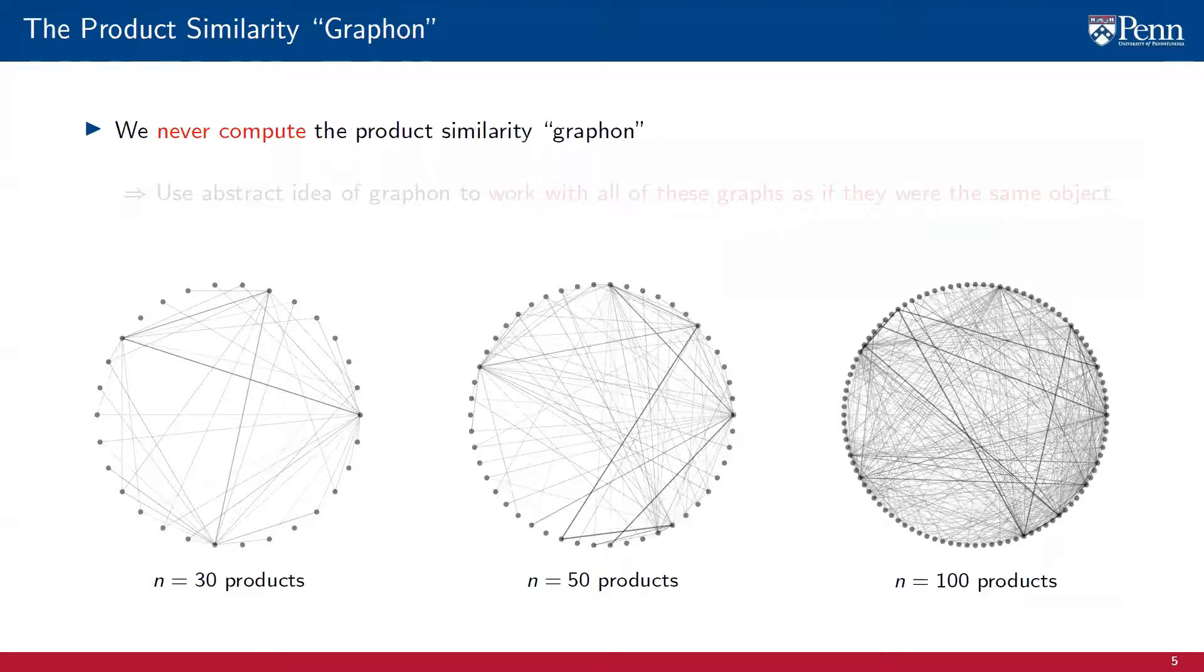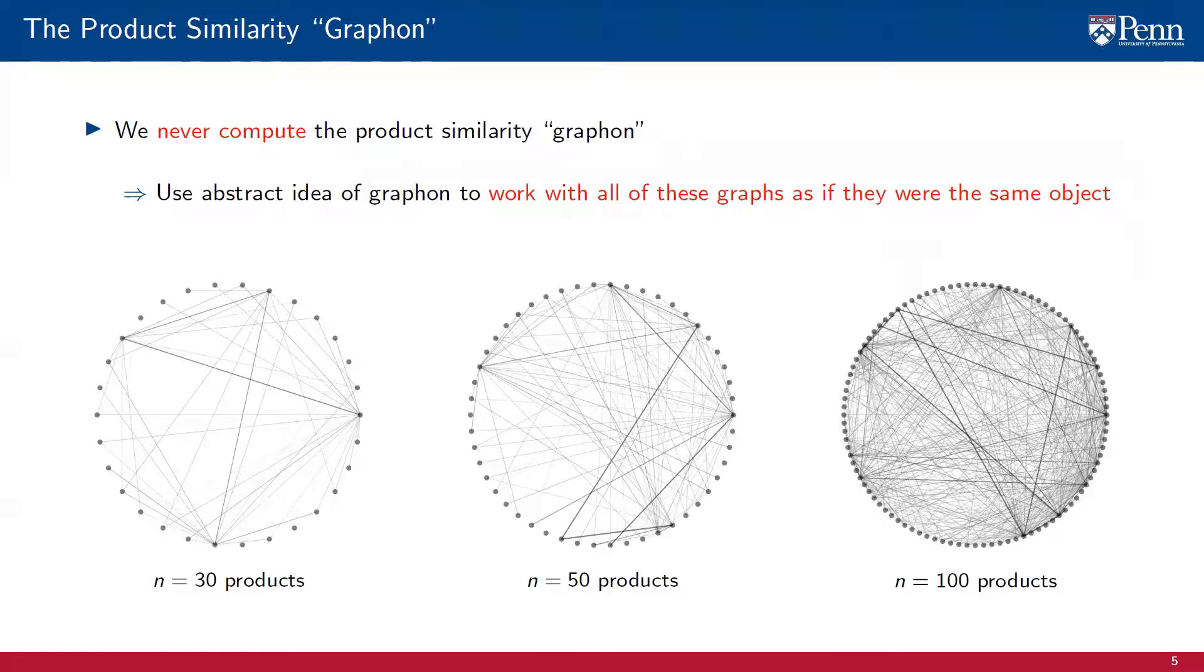It is important to point out that this limit graphon is not something that we compute in practice. We just use the abstract idea of a graphon to work with all of these graphs as if they were the same object, which in a sense they are. They are all close to the product similarity graphon.